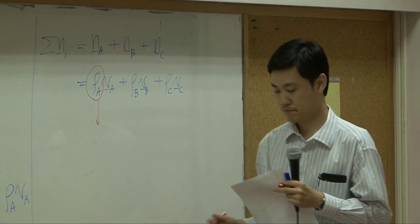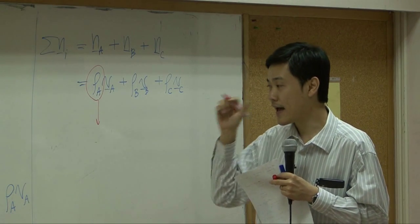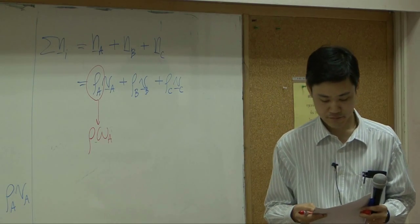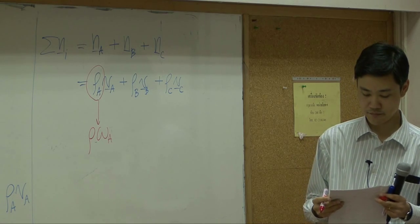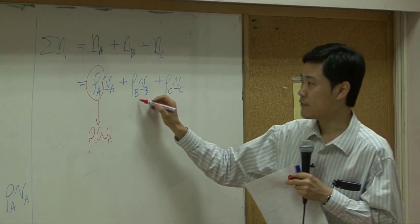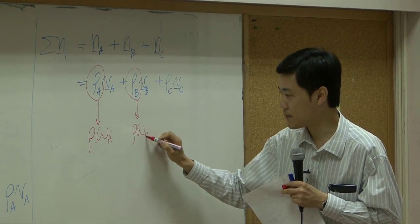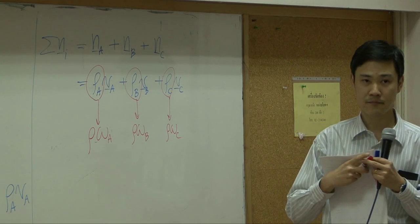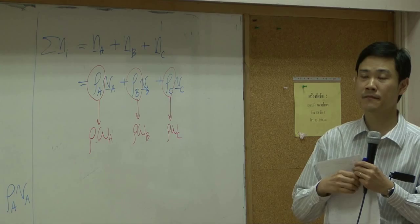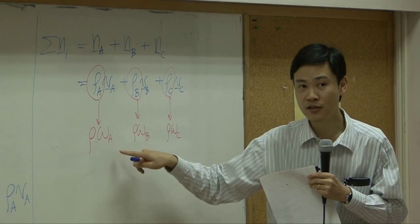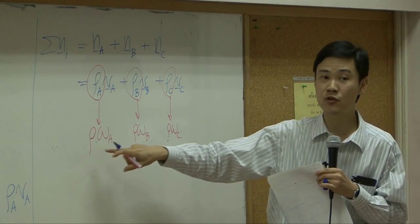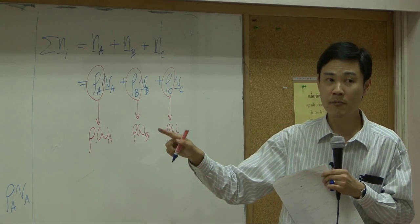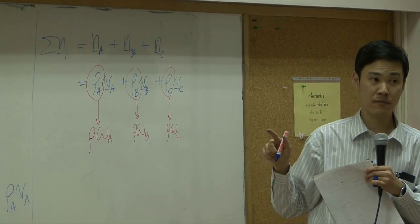Rho A itself can be written as rho times omega A. And rho B would be rho times omega B. Rho C would be rho times omega C. You can take total concentration out. Rho here represents two meanings. First, it represents total mass concentration. It also represents density, total density of the mixture.